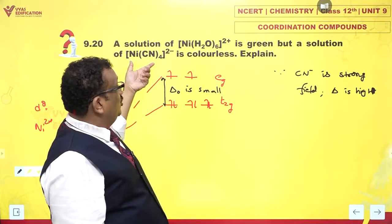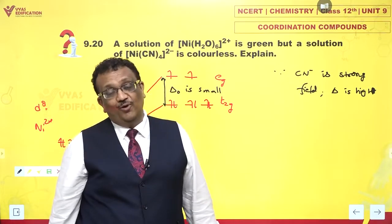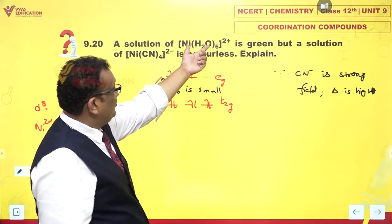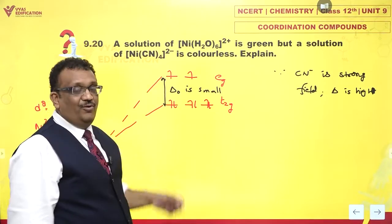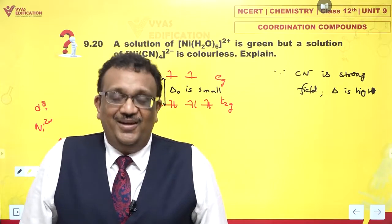Why? It absorbs in UV spectrum, while this one absorbs only red photons. Delta O is less for weak field ligands and delta O is high for strong field ligands. This is the correct reason.